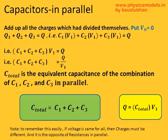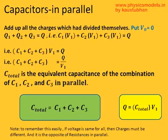So C1·V1 plus C2·V1 plus C3·V1 equals Q. Factoring out V1, you get (C1 plus C2 plus C3) times V1 equals Q, which means C1 plus C2 plus C3 equals Q divided by V1. This leads us to the total equivalent capacitance of the combination: C_total equals C1 plus C2 plus C3. The total charge on the system between those two bus bars is Q equals C_total times V1 — this is the charge supplied by the battery. I hope this video was useful to you. Thanks and have a great day.